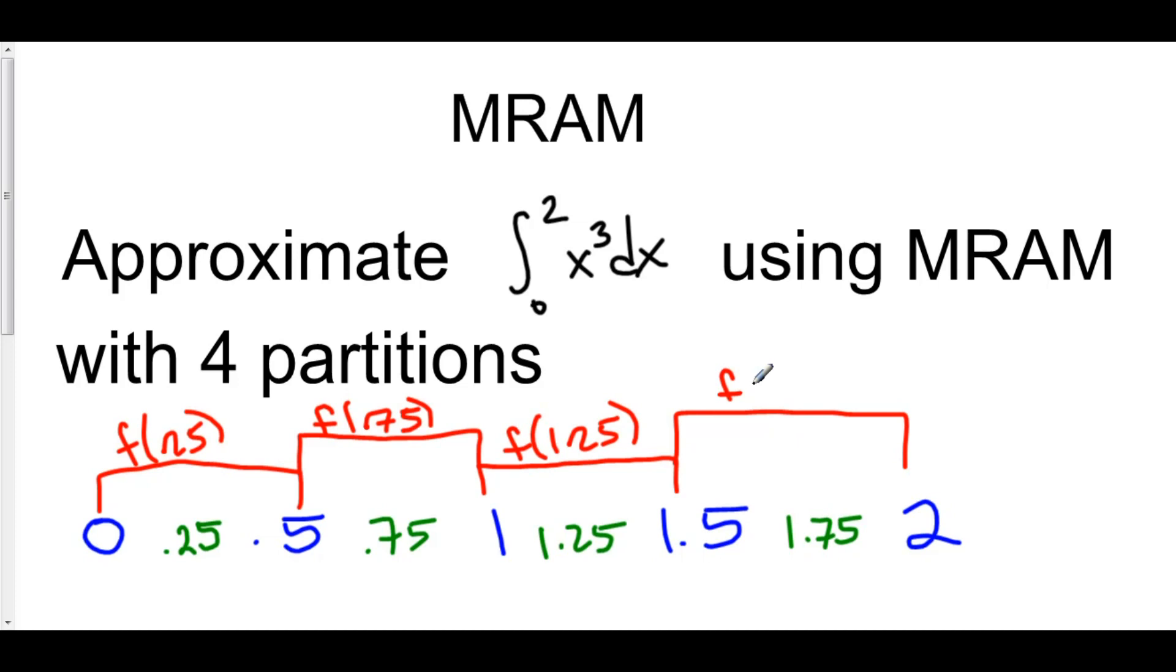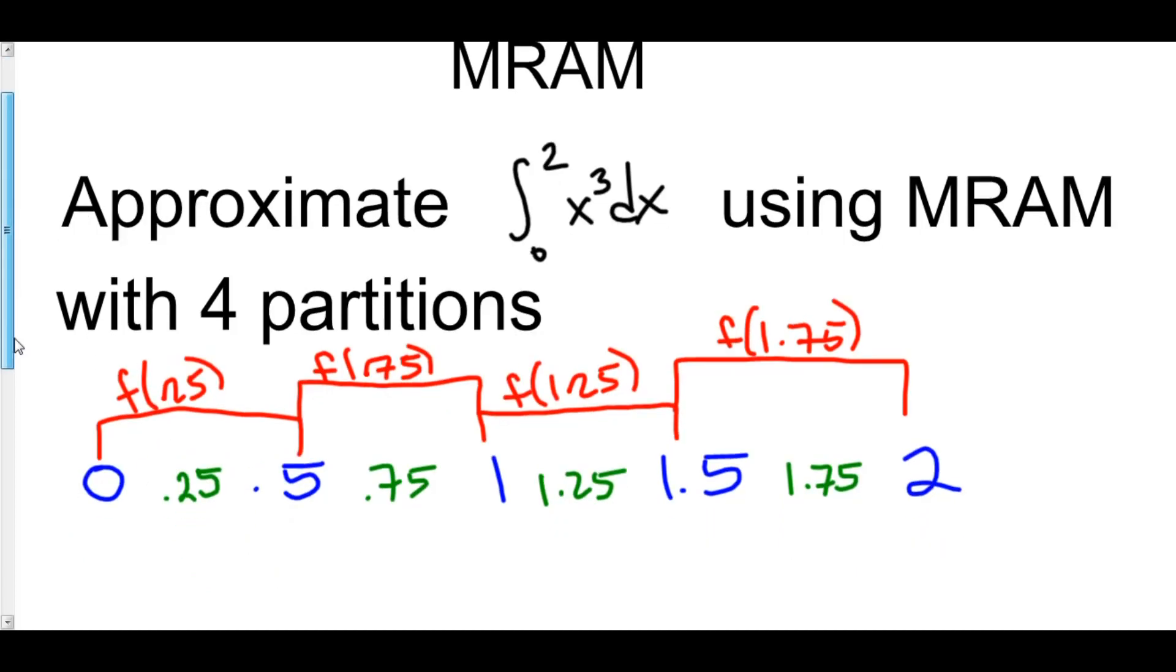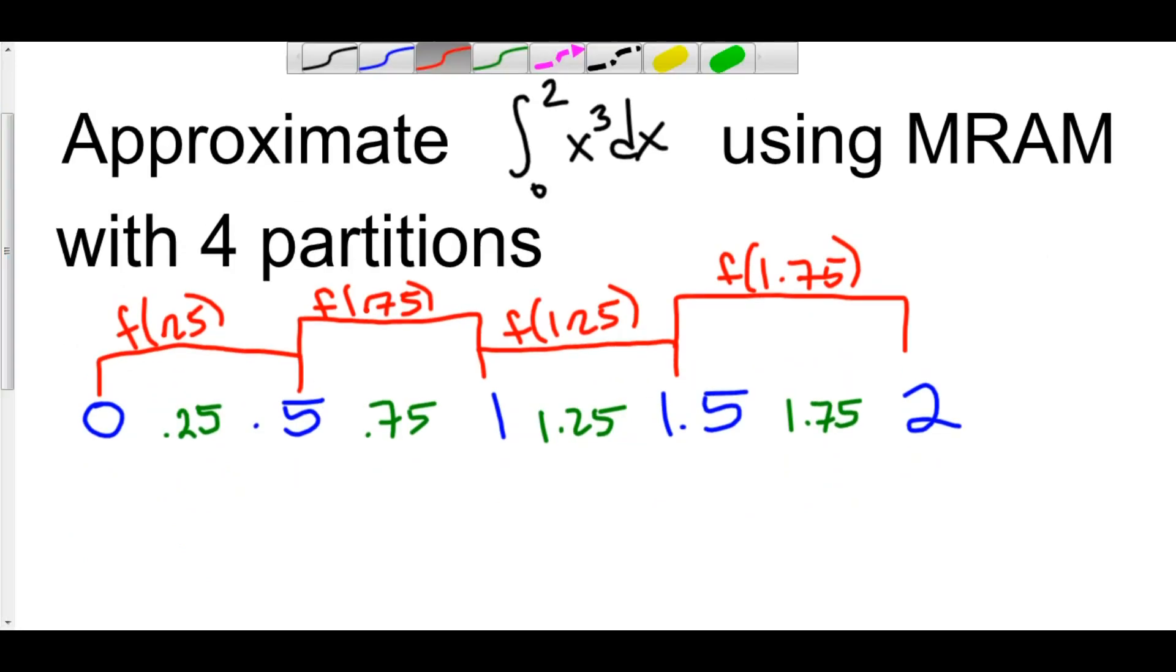Now it is true that MRAM is the hardest of the three different types of Riemann sums that we're using in this section. And the reason is because you have to create your own x value that is the midpoint between x1 and x2 and x2 and x3, so this really is the hardest part of MRAM. And now everything else is exactly the same.